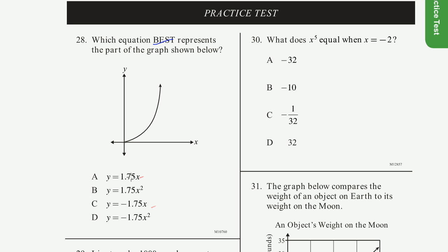Choices A and C are both straight lines — one with a positive slope, one with a negative slope. They would both go through the origin because they don't have any y-intercept. So neither of these is the answer.